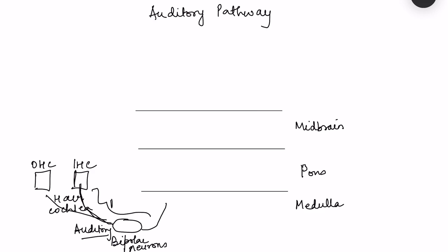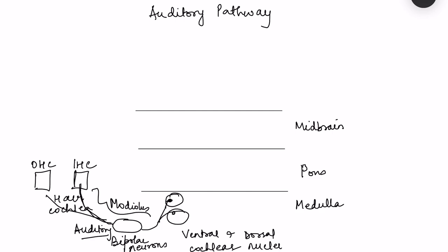The spiral ganglion is present in the modiolus of the cochlea. At the medulla, all the fibers of these axons synapse in nuclei known as the ventral and dorsal cochlear nuclei. So the first synapse is occurring in the cochlear nuclei.